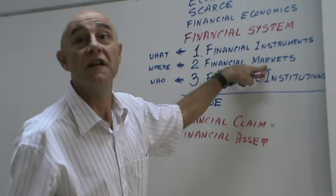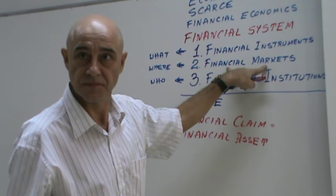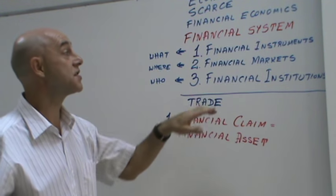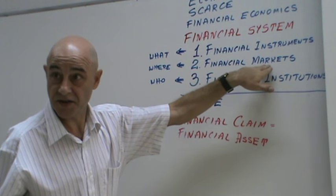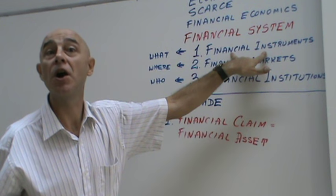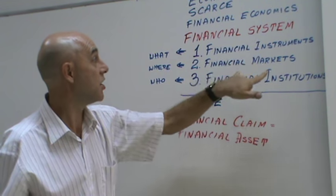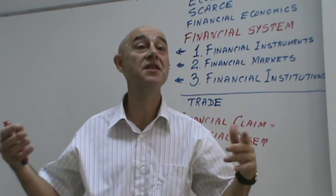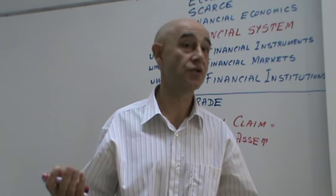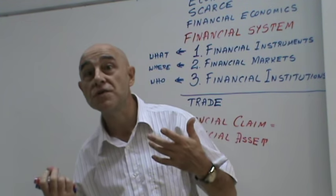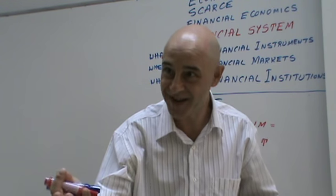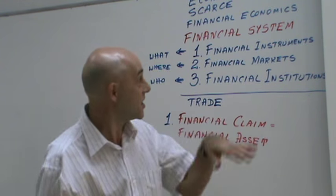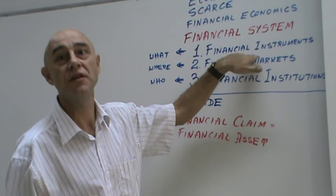What is a financial market? A financial market is a market where financial instruments are traded. Financial instruments are traded on financial markets. Just as you have a fruit market or a clothes market — every time you go shopping you go to the market — a financial market is the market for financial instruments.